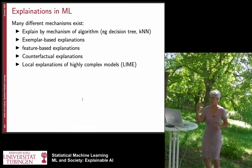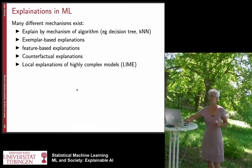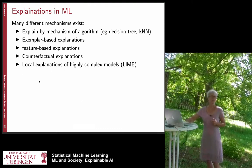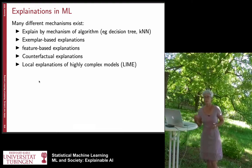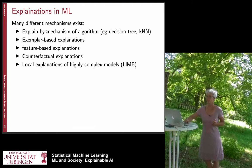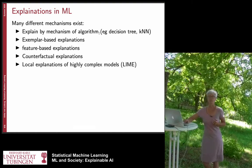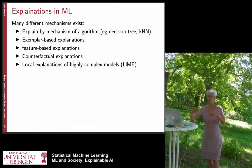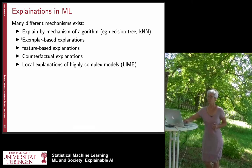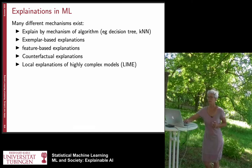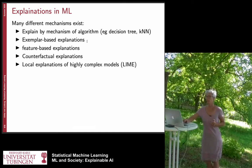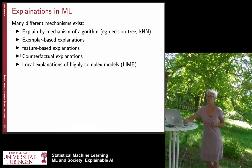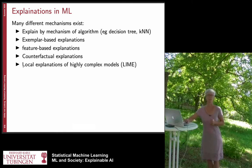There exist many different mechanisms. You could explain by the mechanism of the algorithm itself, like in a k-nearest neighbor graph or a decision tree. There also exist exemplar-based explanations, feature-based explanations, counterfactual explanations, and local explanations. I will present one slide or so for each of them.